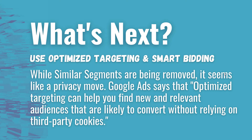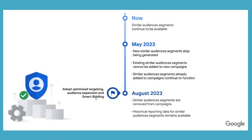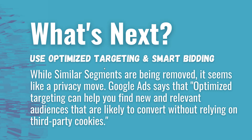What's next? Google Ads is telling people to use optimized targeting and smart bidding. While similar segments are being removed, this seems like a privacy move. Google Ads says optimized targeting can help you find new and relevant audiences likely to convert without relying on third-party cookies. Essentially, Google Ads is removing similar segments because of privacy issues and replacing them with optimized targeting — which does essentially the same thing without using third-party cookies.